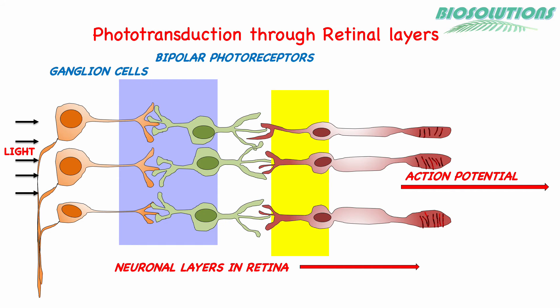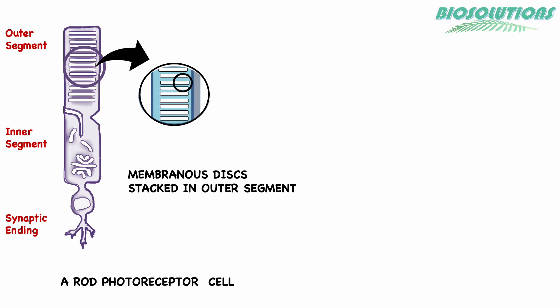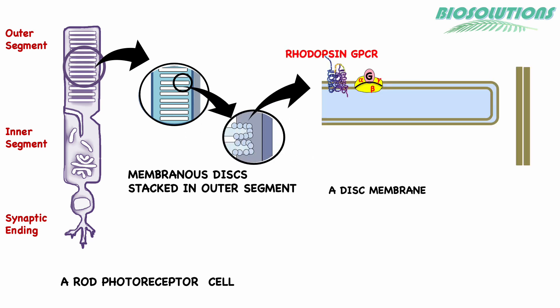These signals are transmitted through the optic nerve to the occipital or visual brain cortex via the visual pathway. The photoreceptors have visual pigments in the membranous discs of their outer segment. Visual pigments are rhodopsin GPCR receptors which interact with light photons.